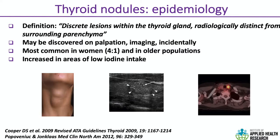A thyroid nodule is defined as a discrete lesion within the thyroid gland that is radiologically distinct from the rest of the gland. We can feel nodules in about 8% of people, see them on imaging, or find them incidentally. This is more common in women — the female to male ratio is four to one — and in older people. In areas with low iodine intake, there is an increased risk of goitre, thyroid enlargement, and thyroid nodules.